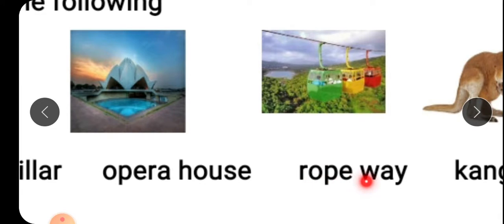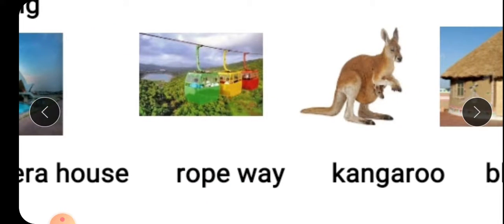Rope means rasti or way means rasta, rasti pe chalne wala rasta, that is rope way. Now this is very easy to identify. Even small kids can understand what is this, it's a kangaroo. You have to just learn the spelling of kangaroo, that is K-A-N-G-A-R-O-O.